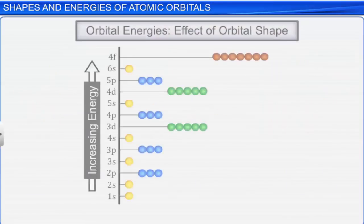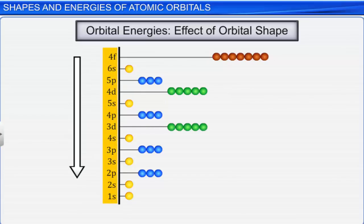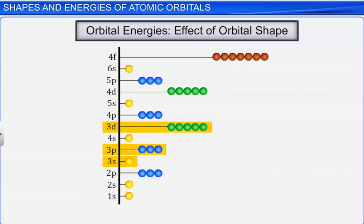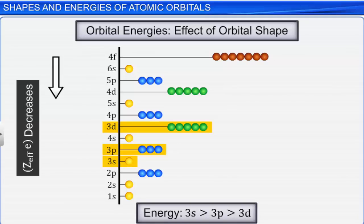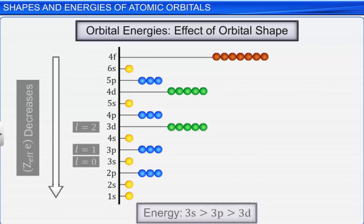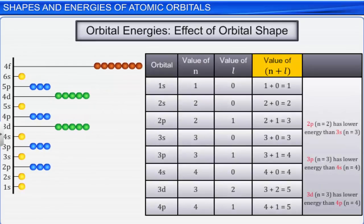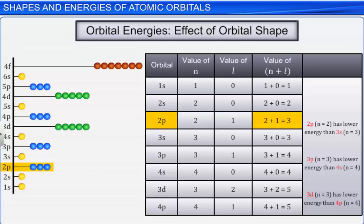Due to the difference in the net effective nuclear charge experienced by different orbitals of a principal shell, the degeneracy is lost and hence they show different energies. As a generic guideline, the lower the value of n + l for an orbital, the lower is its energy. This explains why 4S possesses lesser energy than the 3D orbital. If two orbitals have the same value of n + l — for example, 2P and 3S orbitals — the orbital with the lower value of n, that is 2P, will have the lower energy.